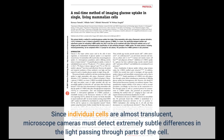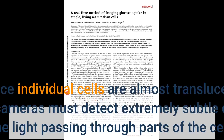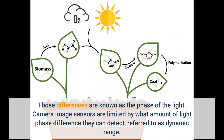Since individual cells are almost translucent, microscope cameras must detect extremely subtle differences in the light passing through parts of the cell. Those differences are known as the phase of the light. Camera image sensors are limited by what amount of light phase difference they can detect, referred to as dynamic range.